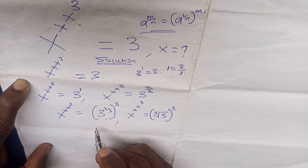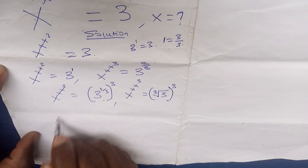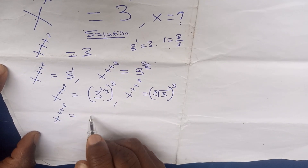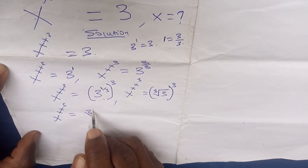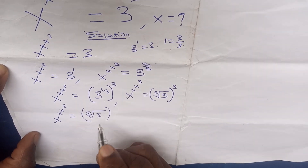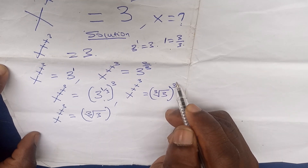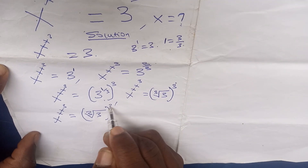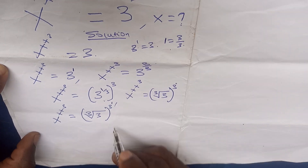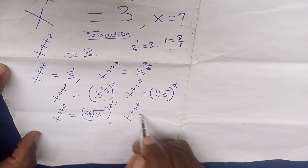It still remains the same. We are having x to the power of x to the power of x to the power of three is equals to the cube root of three. Recall we can also have one at this point, so we can say three to the power of one to the power of one. We're having x to x to x to the power of three is equals to the cube root of three.